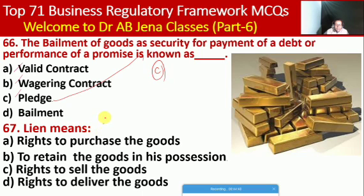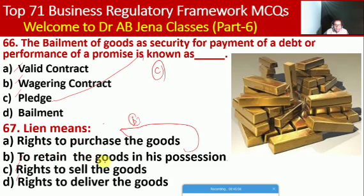Next MCQ: lien means what? Whether the right to purchase the goods, to retain the goods in possession, the right to sell the goods, or the right to deliver the goods. Here B is the right option — lien means the right to retain the goods in one's possession.